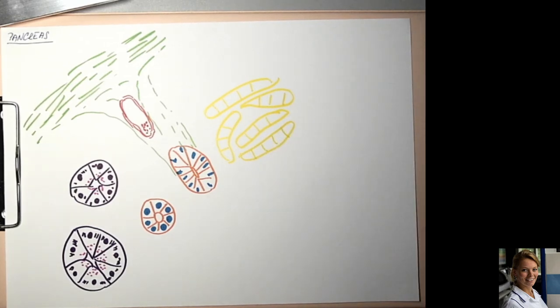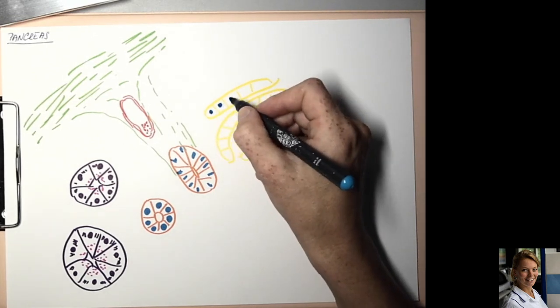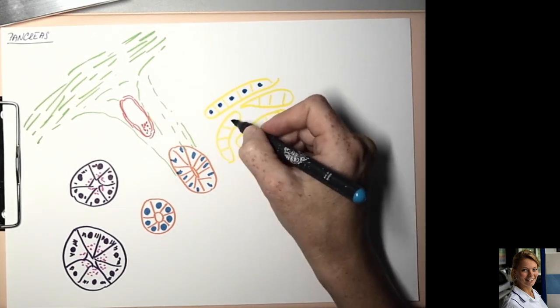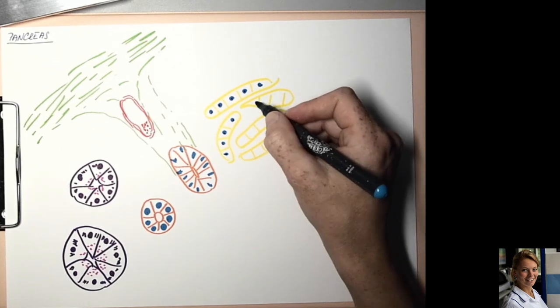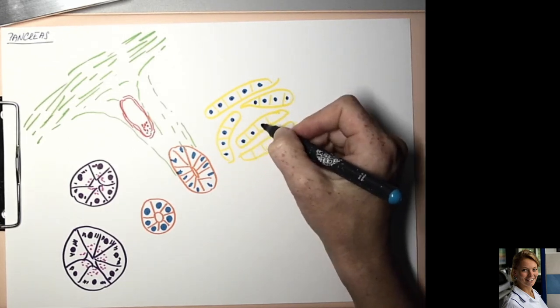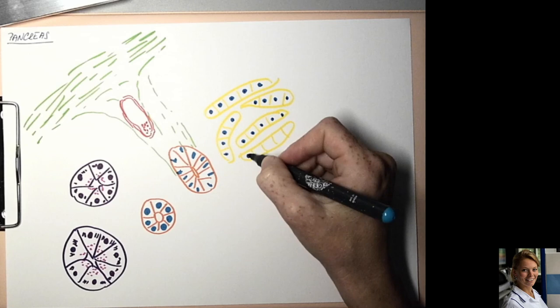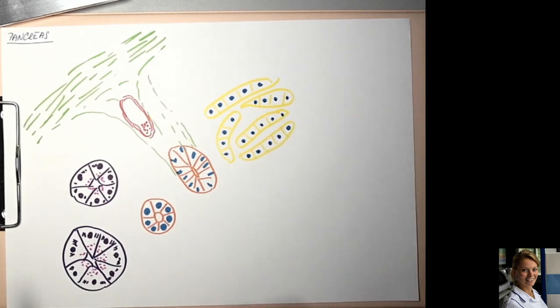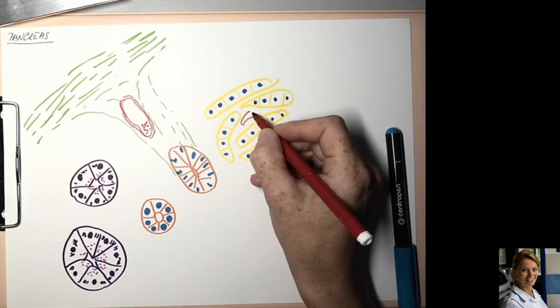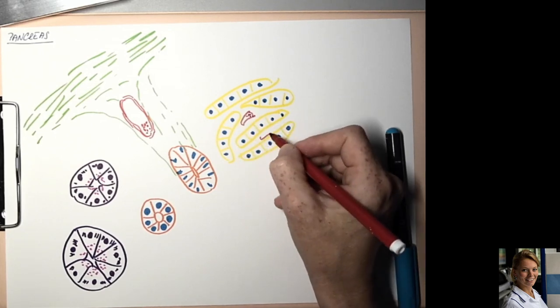And between these cells are capillaries. So here is a small capillary with erythrocytes.